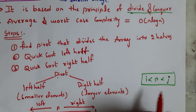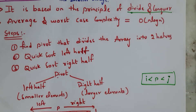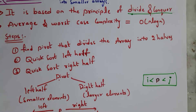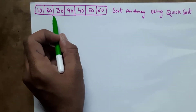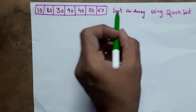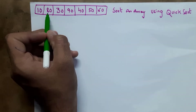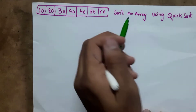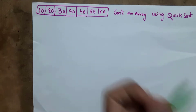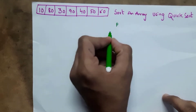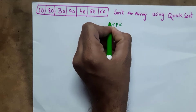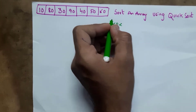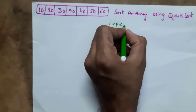The condition is i < p < j — i represents left side elements and j represents right side elements, where pivot is placed at center. Here is an example: we need to sort an array and arrange elements in ascending order using quicksort. You need to remember: in quicksort, you need to select a pivot element such that all left side elements of pivot should be smaller and all right side elements should be larger than pivot.